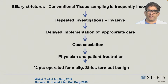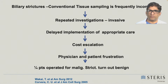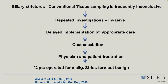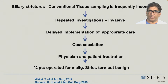Currently, conventional tissue sampling is frequently inconclusive. There are repeated invasive investigations, which leads to delayed implementation of appropriate care, cost escalation, and patient and physician frustration. Even among patients operated on for a stricture, one fourth may turn out to be benign and could have been easily managed by endoscopic methods.